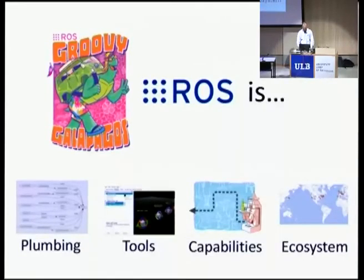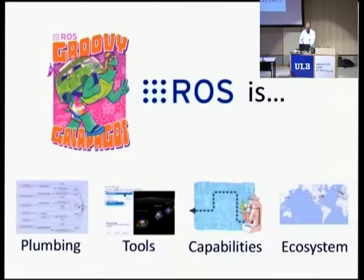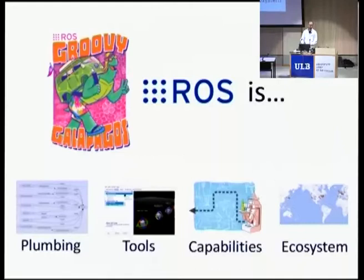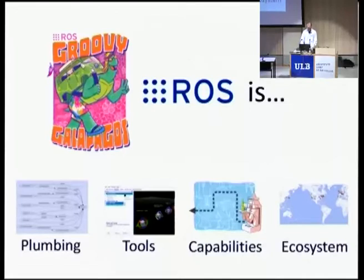Now, what ROS actually is — we can divide it into four main topics. First, it's a set of plumbing: a message passing layer. Second, it's a set of tools — small tools, many command line, some graphical. Third, it's a collection of capabilities: big subsystems of robots such as a navigation system, an image processing system, speech and spoken dialogue systems — and there are multiple computer vision systems you can download from various labs across the world. Finally, it's an ecosystem of many people contributing. I'm going to talk about each of these four things in a little more detail.